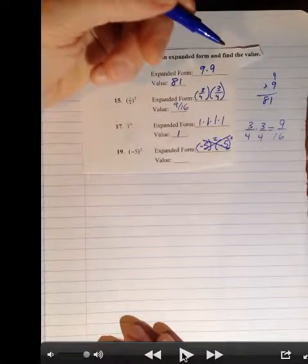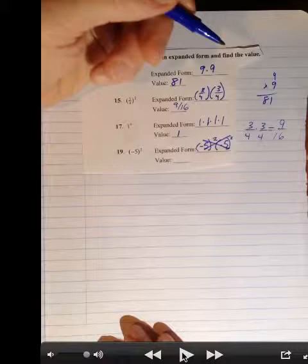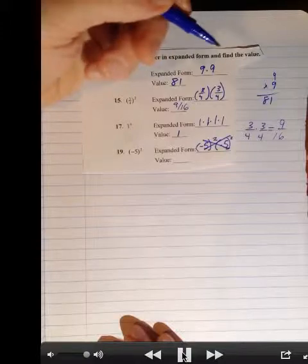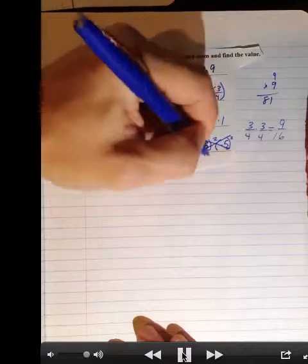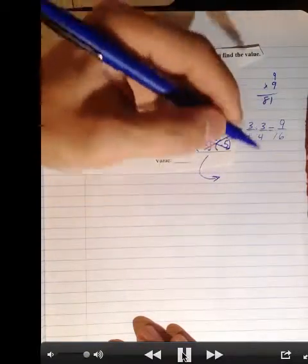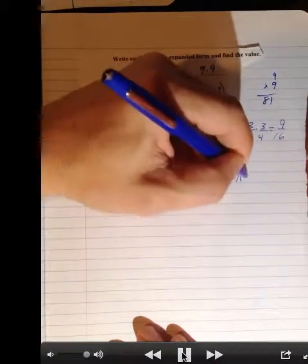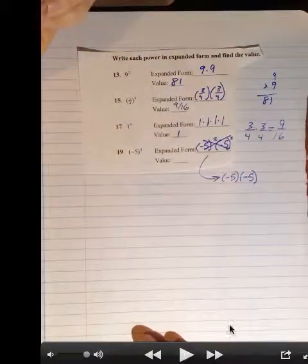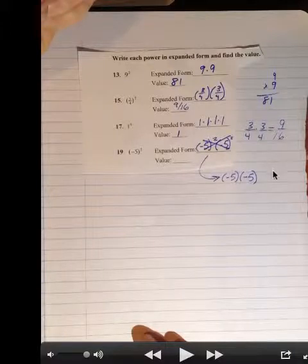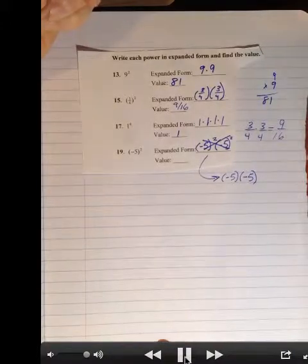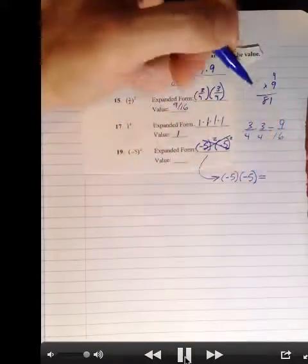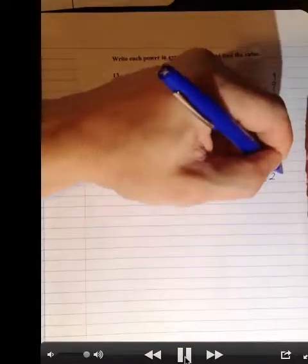It's tempting to copy the whole power, but we don't want to do that. It's not negative 5 squared two times — it's negative 5 two times. This is an example of a negative base with an even exponent. There are only two of them, and that's a negative times a negative, so the answer is going to be positive. The value is positive 25.